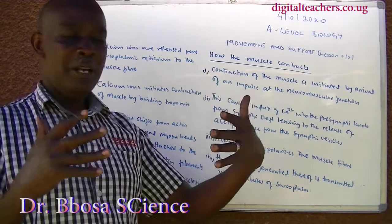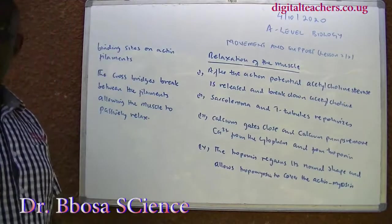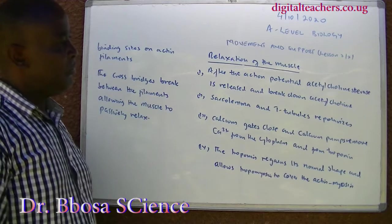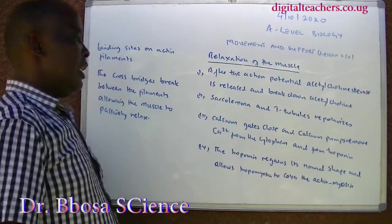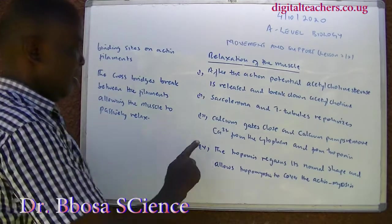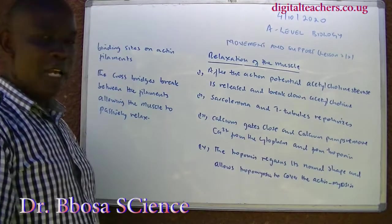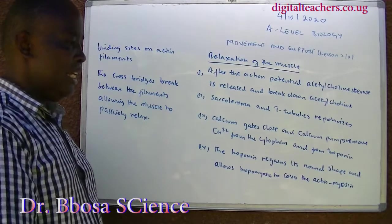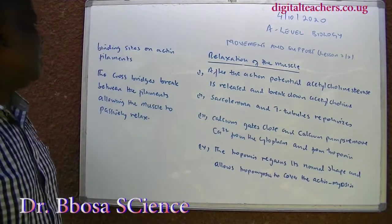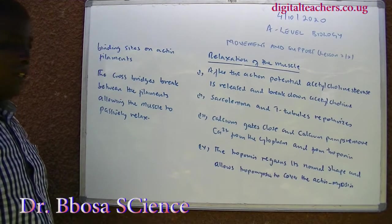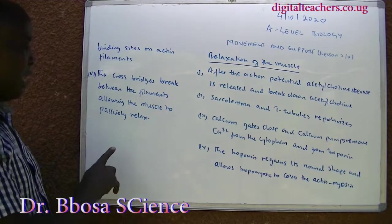During contraction, the actin and myosin filaments slide over one another, shortening the muscle. Relaxation of the muscle: one, after the action potential, acetylcholinesterase is released and breaks down acetylcholine. Two, the sarcolemma and T-tubules repolarize. Three, calcium gates close and calcium pumps remove calcium from the cytoplasm and from troponin. Four, troponin regains its normal shape and allows tropomyosin to cover the actin binding sites on actin filaments. Five, the cross bridges break between the filaments, allowing the muscle to passively relax. During relaxation, the filaments slide out, lengthening the muscle fiber.